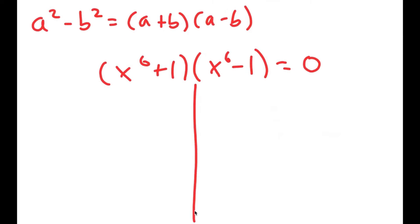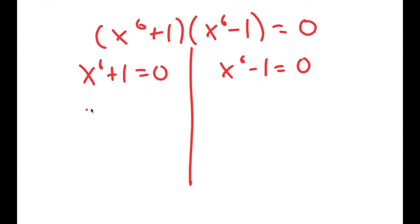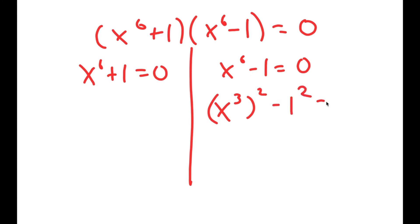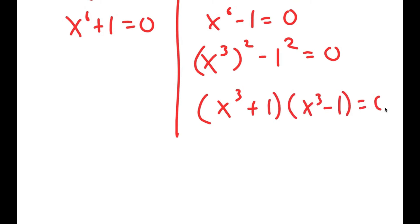This gives me two equations: x to the power of 6 plus 1 equals 0, and x to the power of 6 minus 1 equals 0. Now I'm going to do the same thing again — I'm going to rewrite x to the power of 6 minus 1 equals 0 as (x to the power of 3) squared minus 1 squared is equal to 0. So I can use this property again and get (x to the power of 3 plus 1)(x to the power of 3 minus 1) is equal to 0.